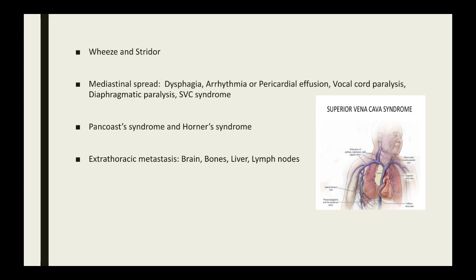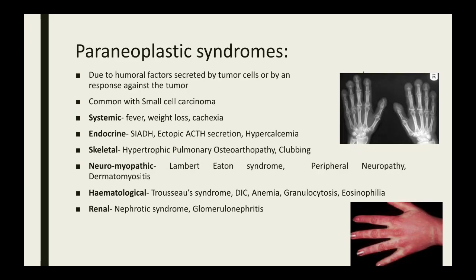Metastasis to the brain can present as focal neurological deficits, epilepsy, and headache. Bone invasion can present as bone pain. Liver invasion can present as abdominal pain and jaundice. Most of the time, lung neoplasms can also present as paraneoplastic syndrome, and these can be the initial features. These paraneoplastic syndromes are due to hormonal factors secreted by the tumor cells or by an immune response against the tumor.